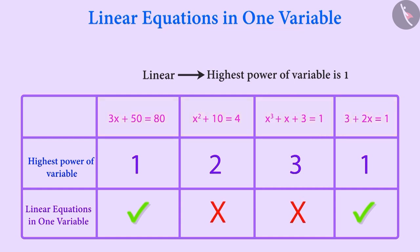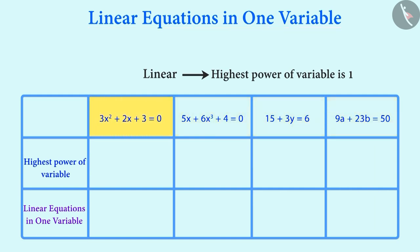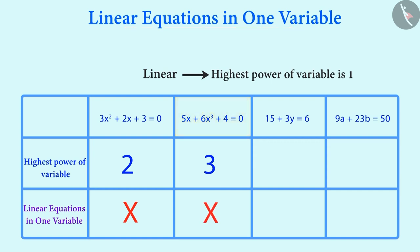Let us look at some more equations. Of these four equations, which equation is a linear equation in one variable? Notice the first equation — the highest power of the variable x is 2, therefore it cannot be a linear equation in a single variable. In the second equation, the highest power of the variable x is 3, therefore this equation also cannot be a linear equation in one variable.